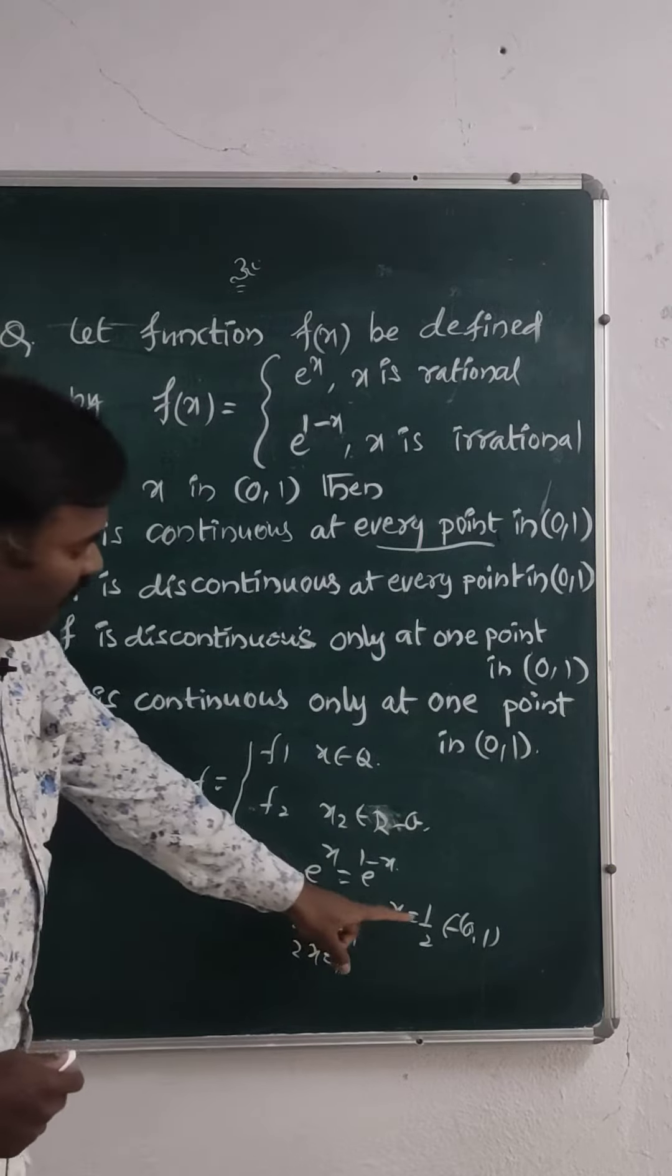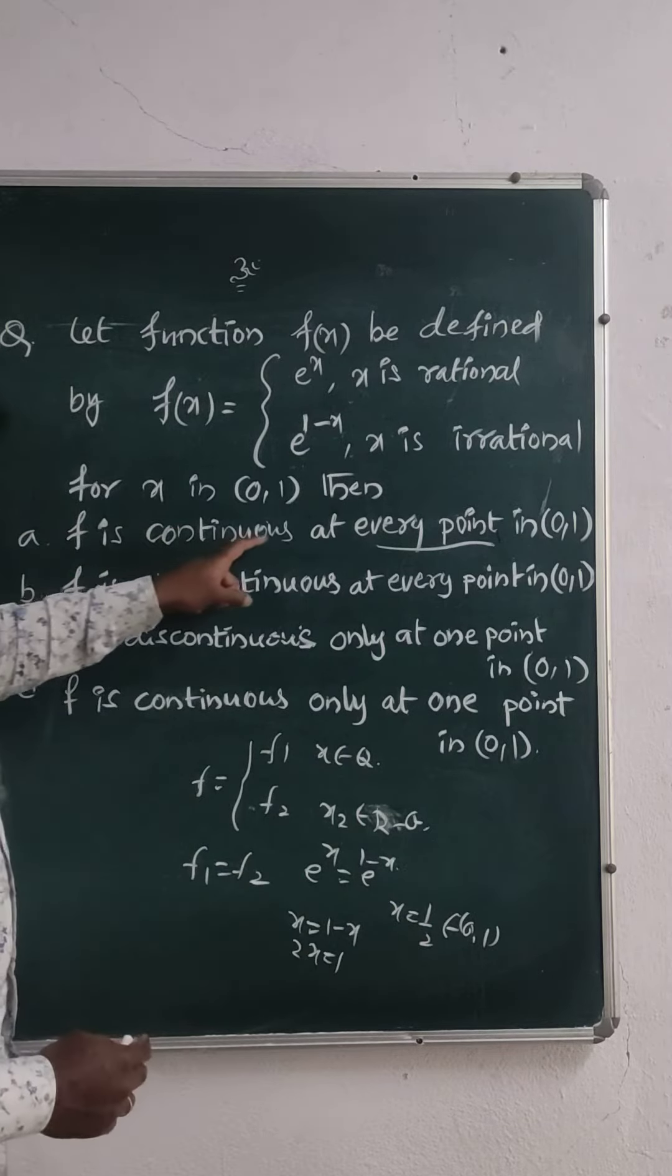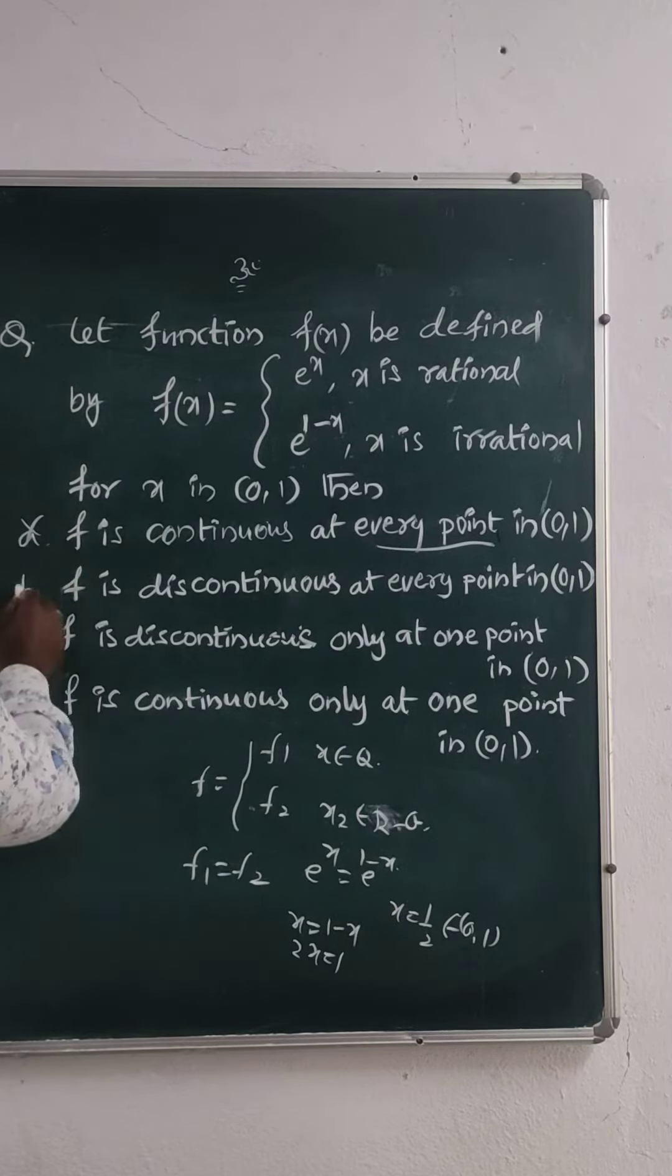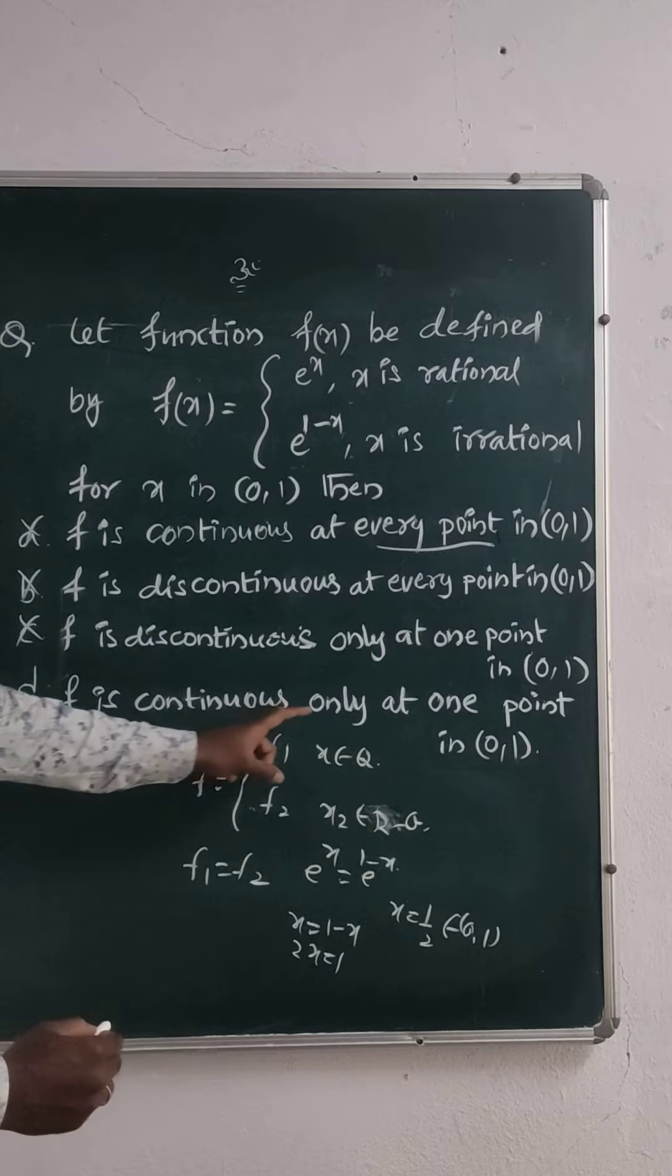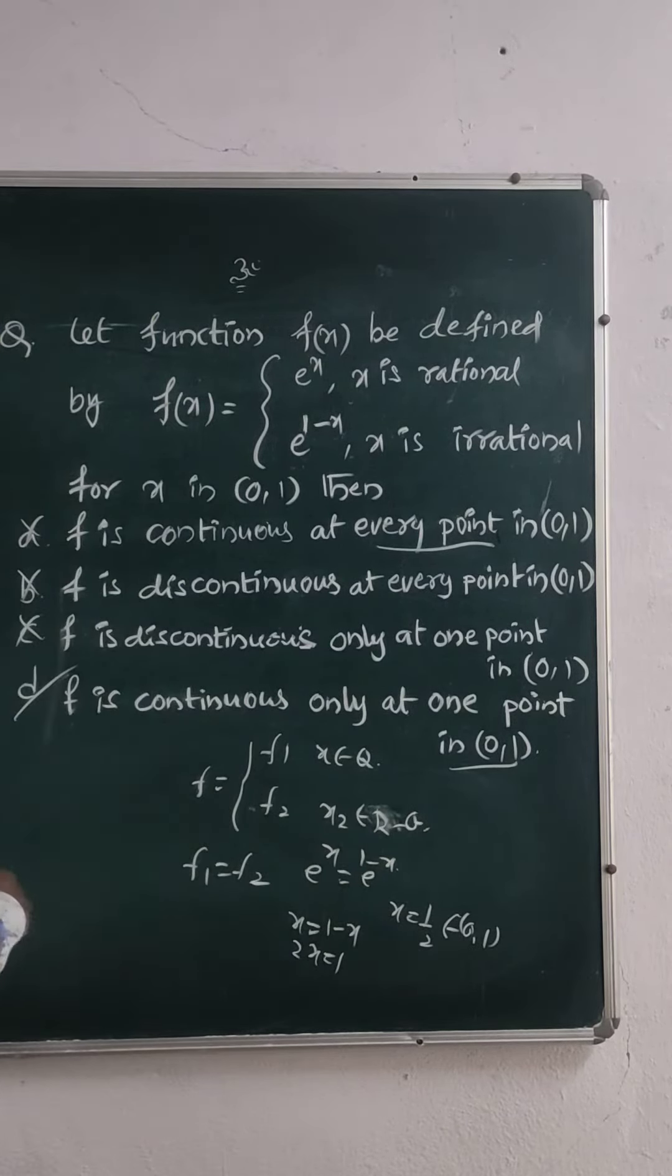So, you can say at x equals 1/2 we have only one point. Continuous at every point wrong, discontinuous wrong, discontinuous wrong. f is continuous only at one point in (0,1). So option d is correct.